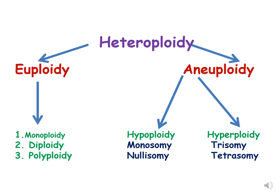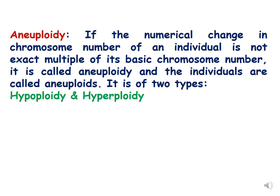As we have discussed, heteroploidy includes euploidy and aneuploidy, and aneuploidy is classified into hypoploidy and hyperploidy. Hypoploidy has examples like monosomy and nullisomy, and hyperploidy has examples of trisomy and tetrasomy. Aneuploidy is the numerical change in chromosome number such that it is not an exact multiple of the basic chromosome number, and the individuals are called aneuploids. It is of two types: hypoploidy and hyperploidy.